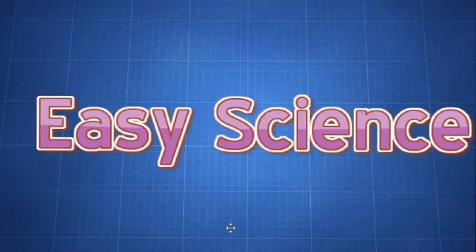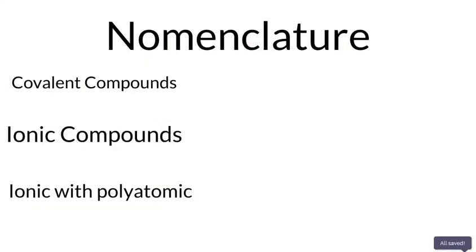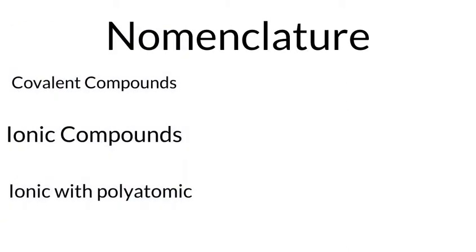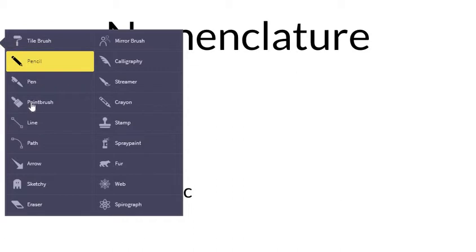Hey guys, Easy Science here. Michael here. Today's video is going to be a new one, so stay in tune. Today's video is about nomenclature, which means, in easier terms, naming of things and choosing names for things in particular fields of sciences, such as chemistry, physics, anything.